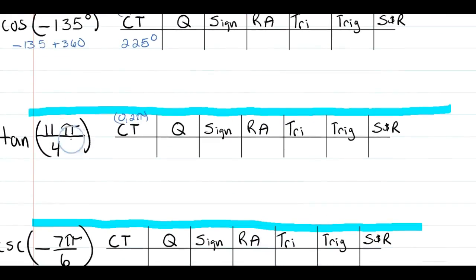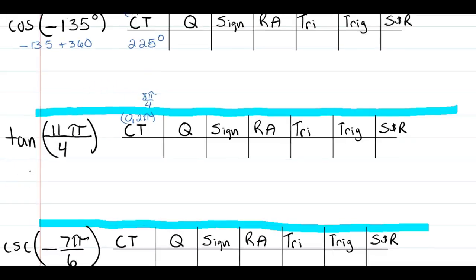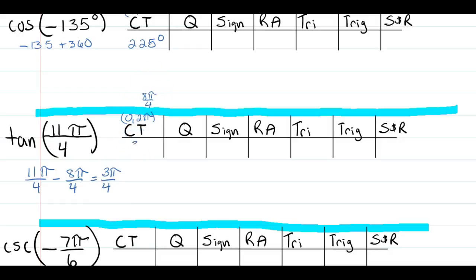For tangent of 11π/4, we add or subtract 2π. Since 11π/4 is greater than 2π (which is 8π/4 in fourths), we subtract 8π/4. So 11π/4 minus 8π/4 equals 3π/4, which is now less than 2π. Our coterminal angle is 3π/4.